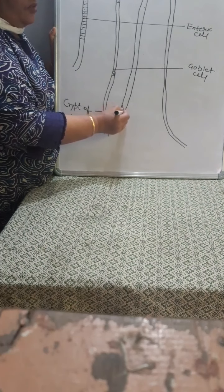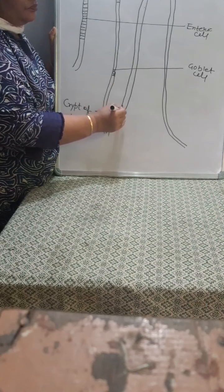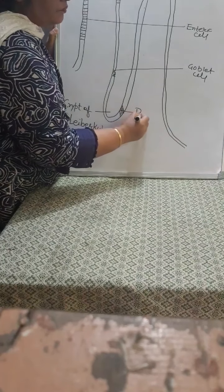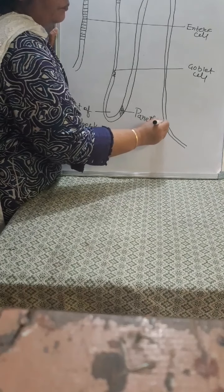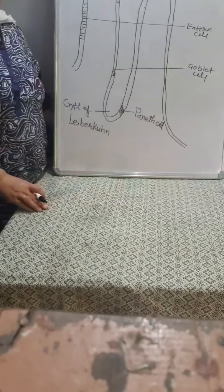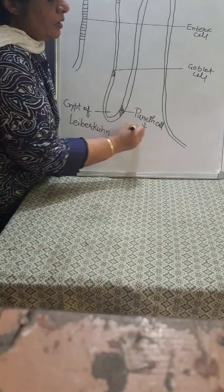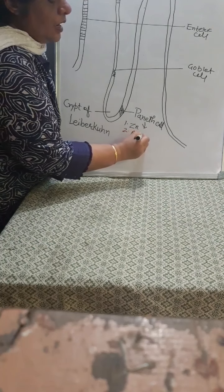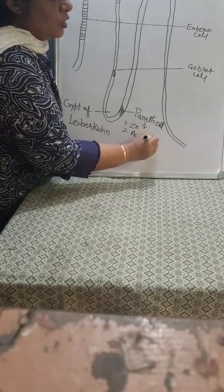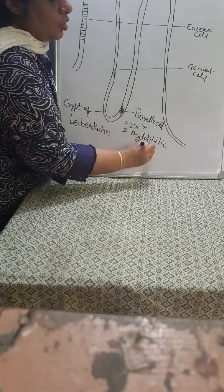At the base of this crypt of Lieberkühn there are two different types of cells. These are called Paneth cells. These Paneth cells contain zinc. Secondly, they contain acidophilic granules.